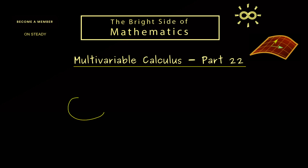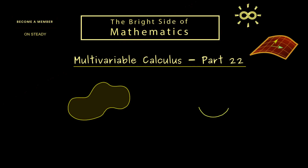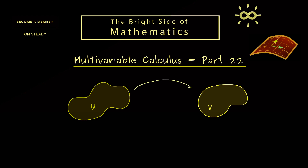With that, let's mainly recall the notion of a diffeomorphism from the last video. We just take two open sets in R^n and call them U and V. Then we have a bijective map f that goes from U to V. We call the map a diffeomorphism if it's differentiable in both directions — more precisely, continuously differentiable of order k. Then we have our C^k diffeomorphism, and you see it's a global definition.